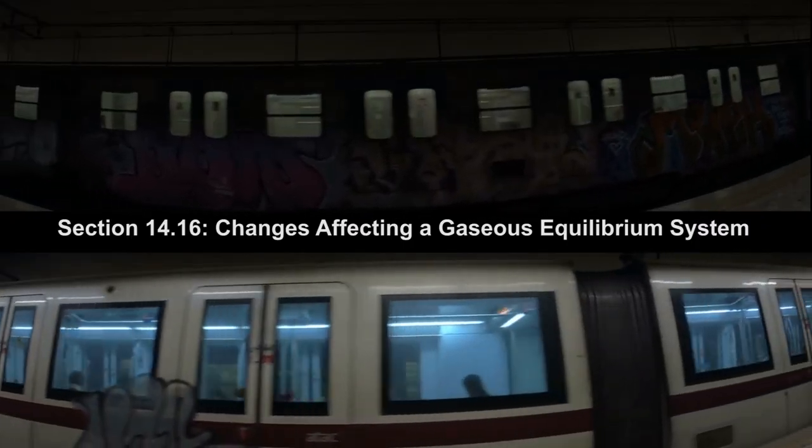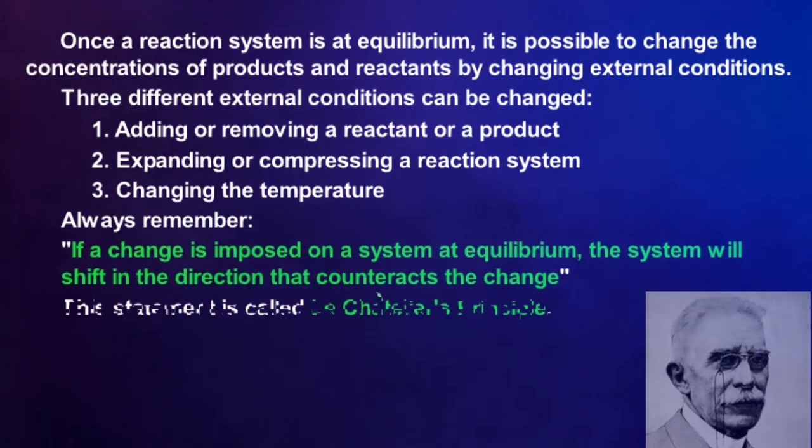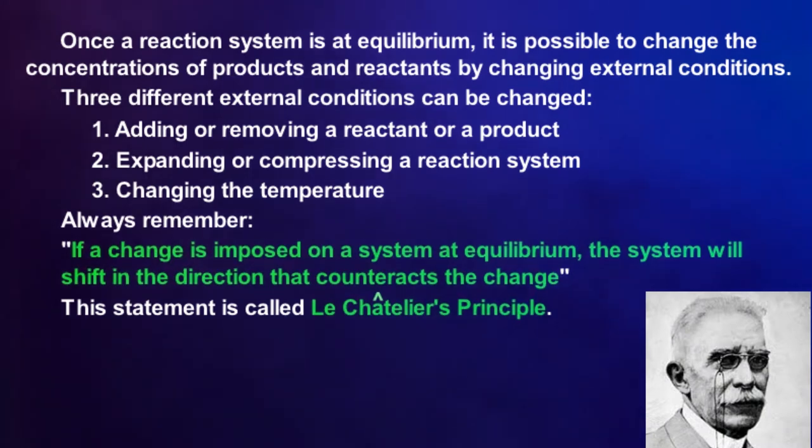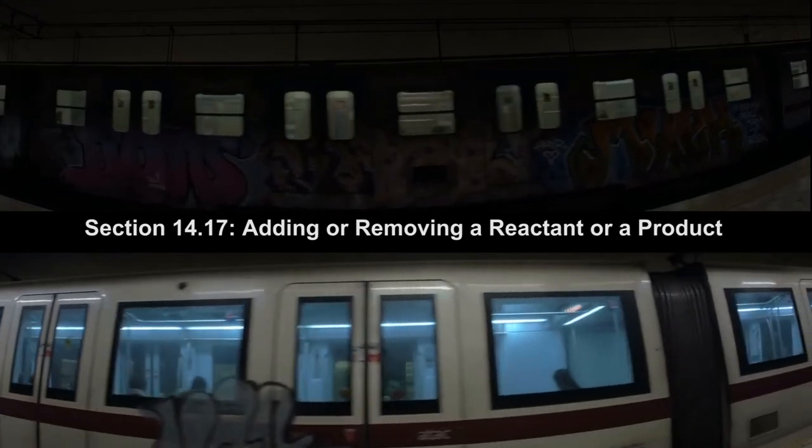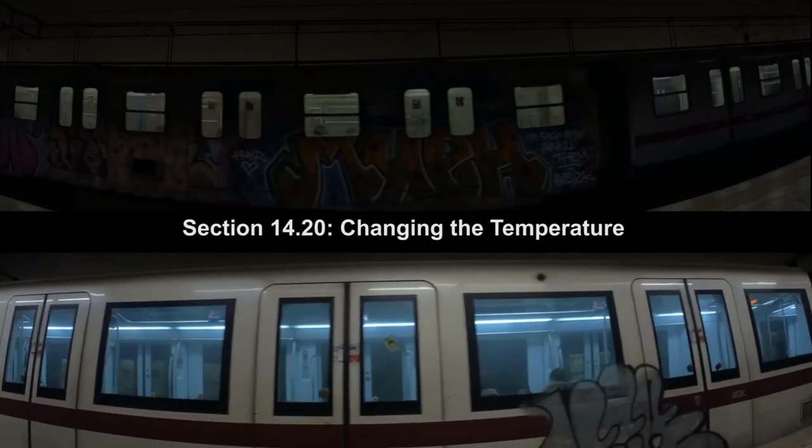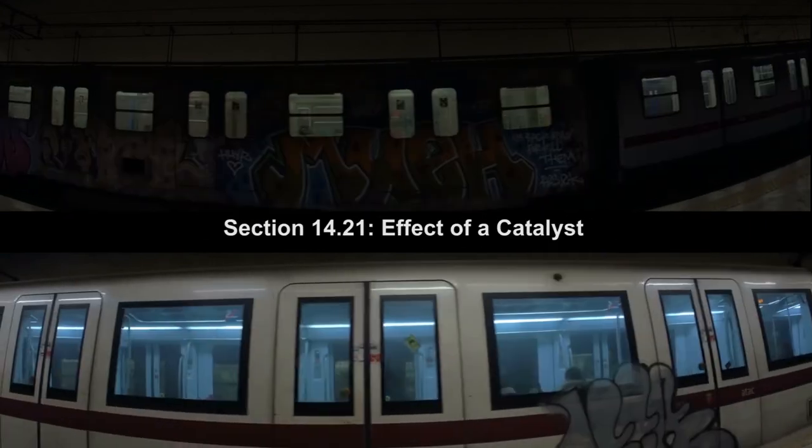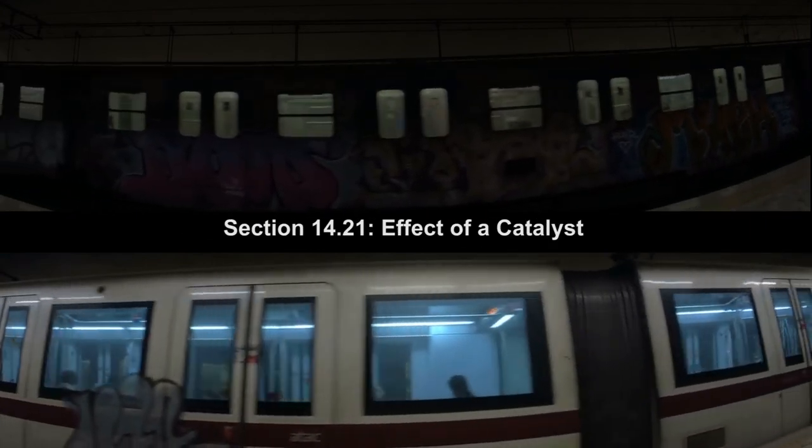Sections 14.16 to 14.22 focus on the understanding of Le Chatelier's principle. Effects of different conditions resulting in the shift in the direction to attain chemical equilibrium are discussed.